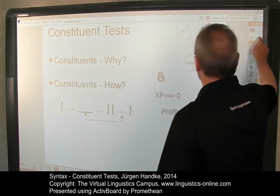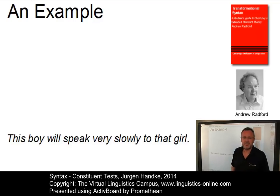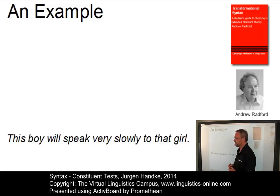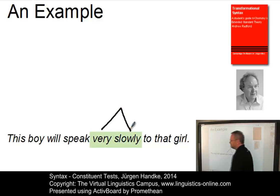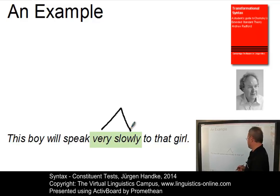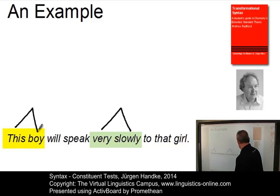Let us illustrate that using a standard sentence: 'This boy will speak very slowly to that girl,' a sentence from Andrew Radford's 1977 book Transformational Syntax. We will probably all agree that 'very' goes with 'slowly' and not with 'speak.' We will furthermore agree that 'this' and 'boy' go together, and similarly 'that' and 'girl.'